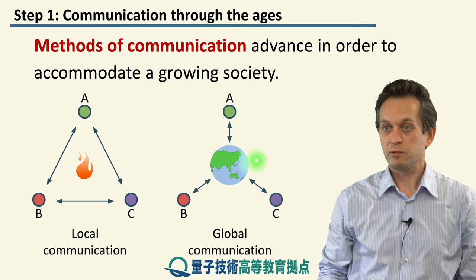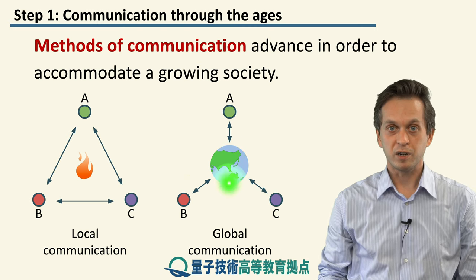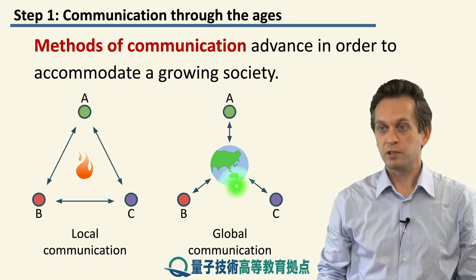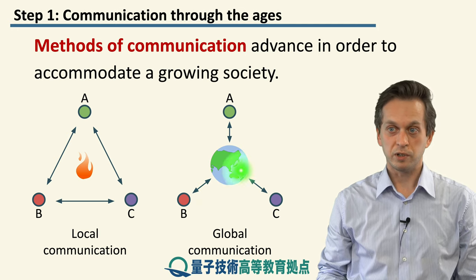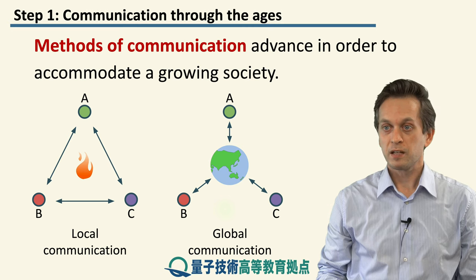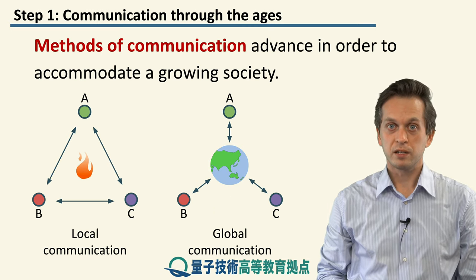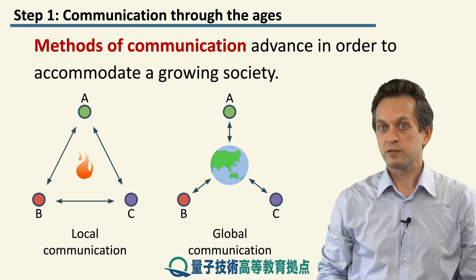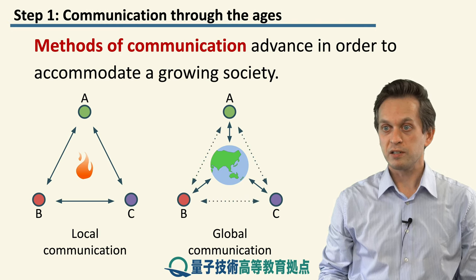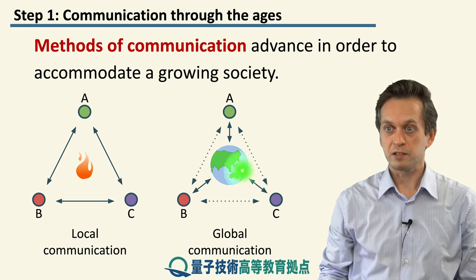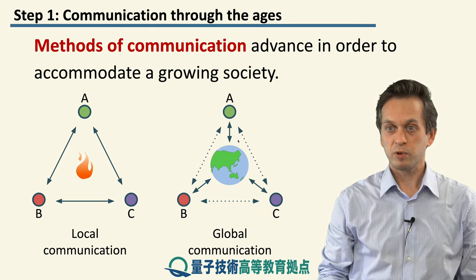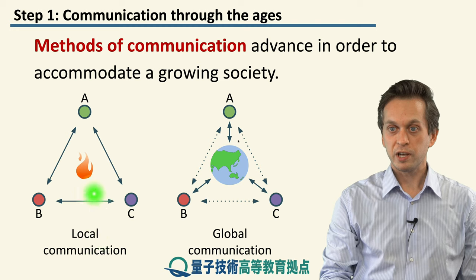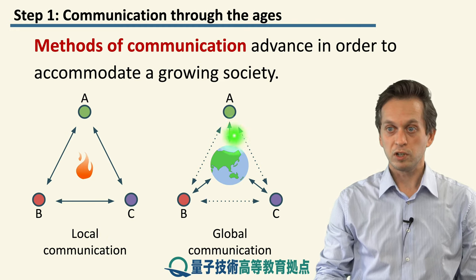Until we finally reached our modern age, where basically every device we have — our phones, TVs, iPads, even our fridges — they're all connected to one single network: the internet. Even though we are separated by many thousands of kilometers, it almost feels as if everybody can communicate directly to anybody else, regardless of where they're located on our planet. We went from local communication to a truly global communication.